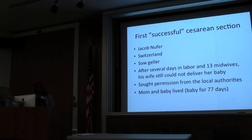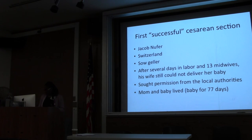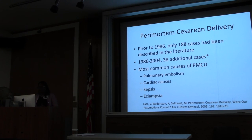What came out of this is that some of the first successful cesareans where the mother actually lived were not in hospitals — hospitals in those days were places where people went to die, filled with infection, and antiseptics weren't invented yet. The few reports of successful cesarean sections are actually from farms or other non-constrained areas where the mother wouldn't get infected and die from sepsis.